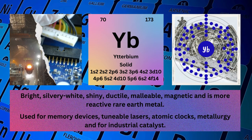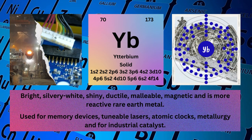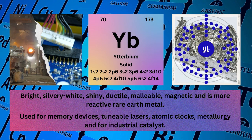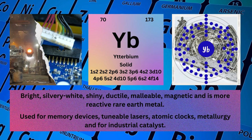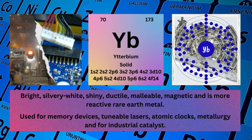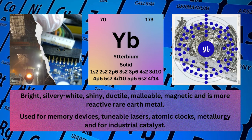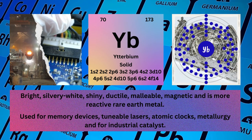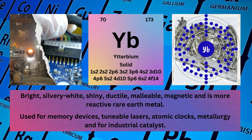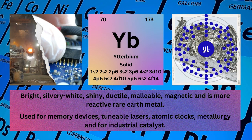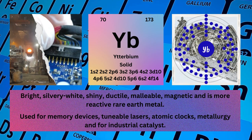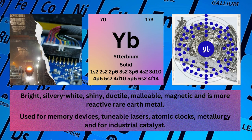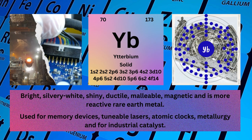Electronic configuration: 1s²2s²2p⁶3s²3p⁶4s²3d¹⁰4p⁶5s²4d¹⁰5p⁶6s²4f¹⁴. Physical properties: Bright, silvery-white, shiny, ductile, malleable, magnetic and more reactive rare earth metal.